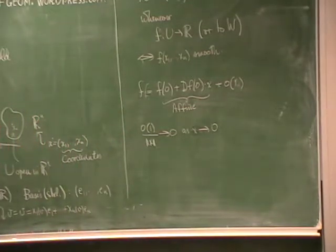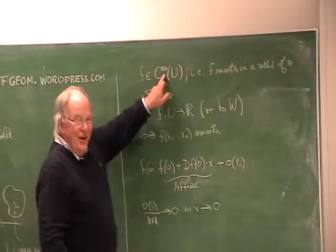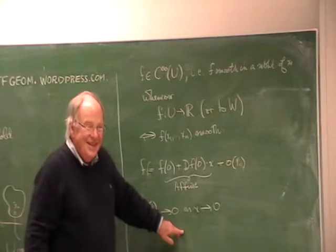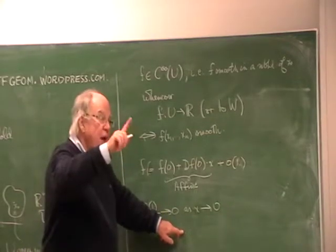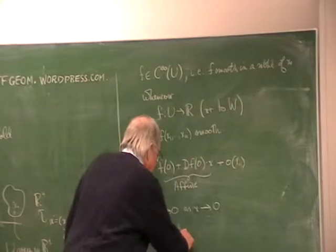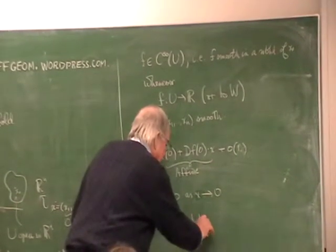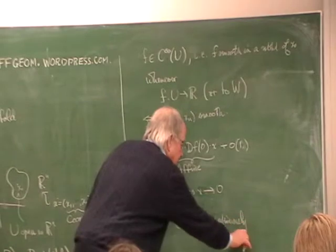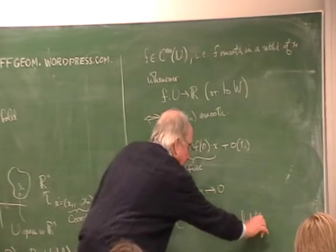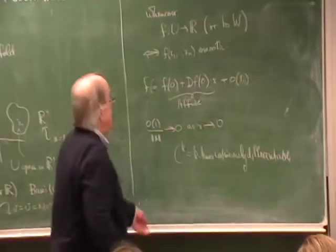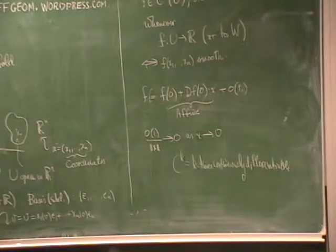We are discussing functions that are differentiable. I wrote C∞ here, but of course that only means C∞ differentiable. C¹ means one time continuously differentiable. Cᵏ means k times continuously differentiable. Right now I am not worried too much about degrees of differentiability.